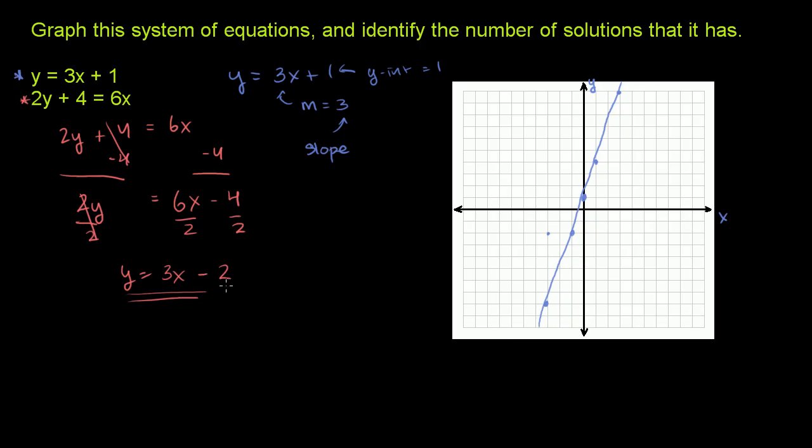So same drill here. The y-intercept is negative 2. So we go, that's negative 1, negative 2 right there. And its slope is 3. And notice, its slope is the same as the other line. So it's going to have the same inclination. If we move 1 in the x direction, we move up 3 in the y direction. 1, up 3. If we go back 1 in x, we go down 3. Back 1 in x, we go down 3.